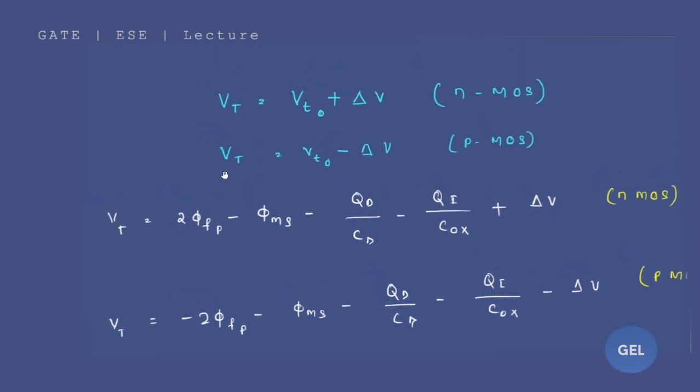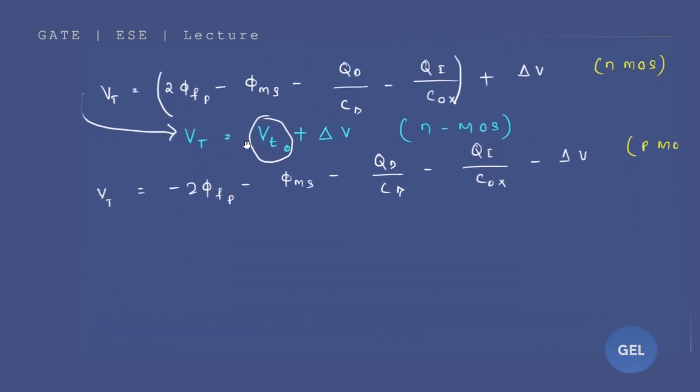So the final expression that we got for n MOSFET is 2 phi fp minus phi ms minus QD by CD minus Qi by Cox plus del V. So finally your del VT term, you got this. This term is your VT naught.